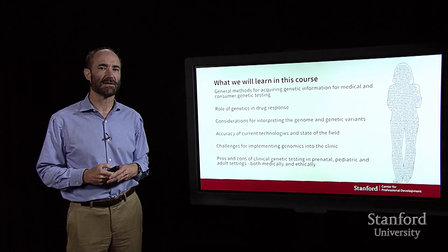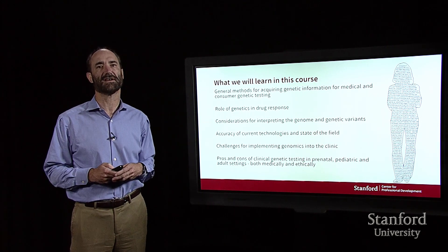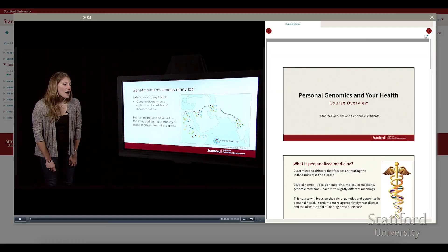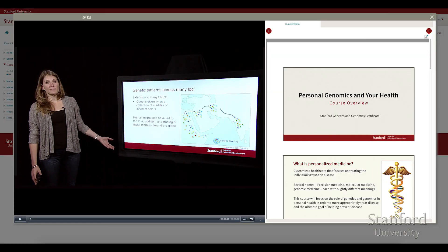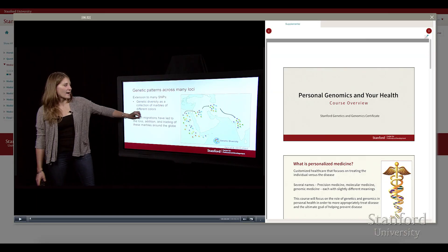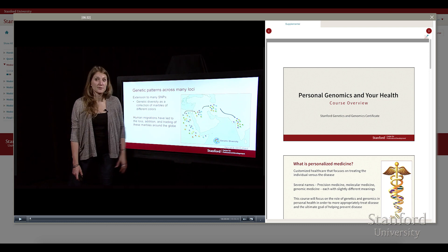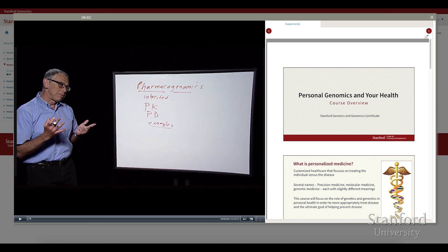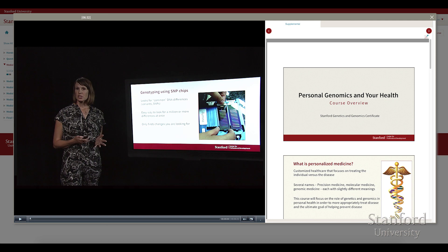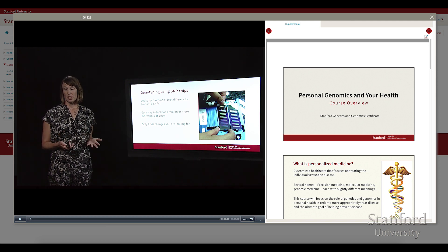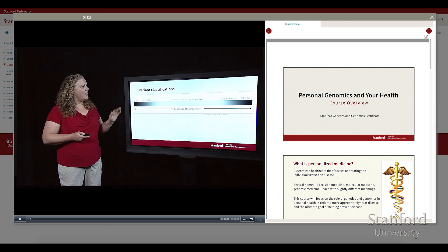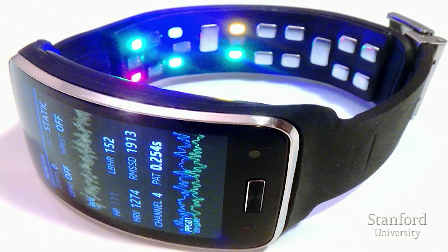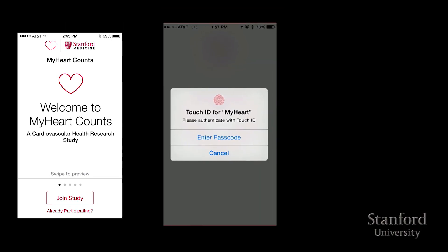In this course we're going to learn about lots of different aspects of personalized medicine and genomic medicine. We're going to learn about general methods for acquiring genetic information for medical and consumer testing, about pharmacogenomics and the role of genetics in drug response, and about considerations for interpreting genomes and genetic variants, which is still a very tricky business. We're also talking about the technology and its accuracy and where it currently stands.